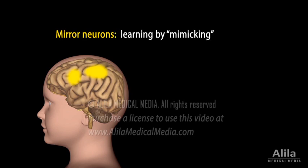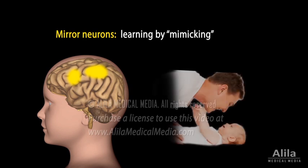Mirror neurons are thought to be responsible for mimicking behaviors that form the basis of our ability to learn new expressions or skills by imitating other people. For example, by seeing an adult smile, a baby learns to smile back. Altered function of these neurons may underlie the inability to express emotions or understand other people's emotions in someone with autism.